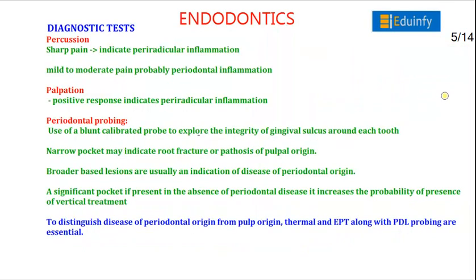Various tests are performed to check the vitality of the tooth. In the percussion test, sharp pain indicates periradicular inflammation, while mild to moderate pain indicates periodontal inflammation. In palpation, a positive response indicates periradicular inflammation.